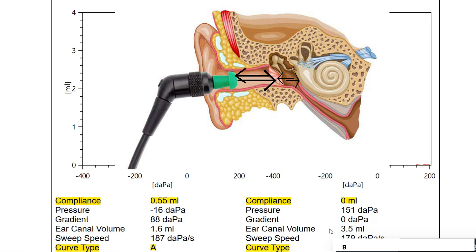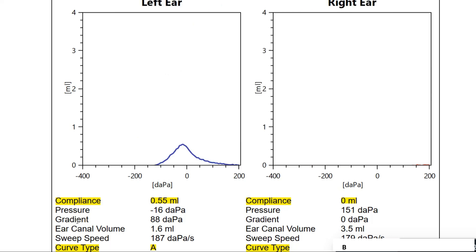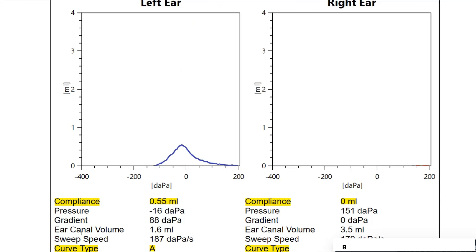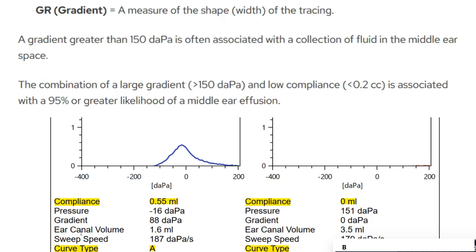Gradient is a measure of the shape or width of the tracing. If there is a combination of large gradient — more than 150 daPascal — and low compliance, it is associated with middle ear effusion. I hope this discussion was helpful for you. Thank you for watching, goodbye.